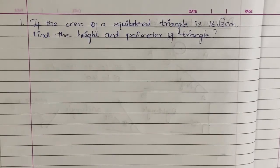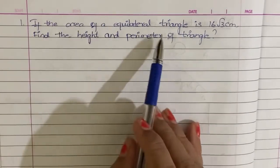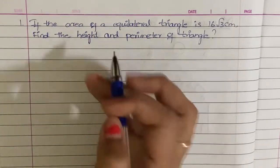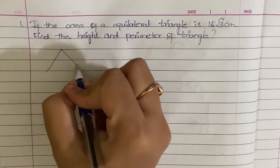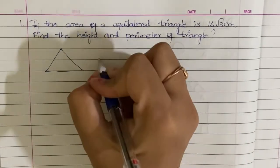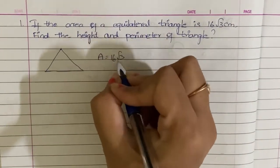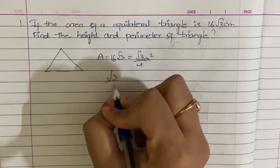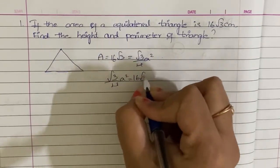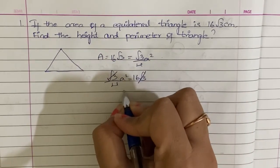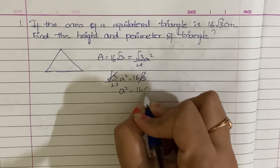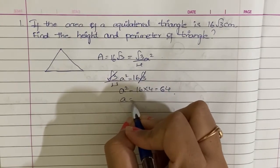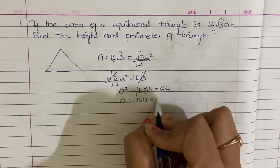If the area of the equilateral triangle is 16 root 3 square centimeters, find the height and perimeter of the triangle. Using the formula: area equals root 3 by 4 times A squared. So root 3 by 4 times A squared equals 16 root 3. Root 3 cancels on both sides. A squared equals 16 times 4, that is equal to 64. So A equals root of 64, that is equal to 8 centimeters.